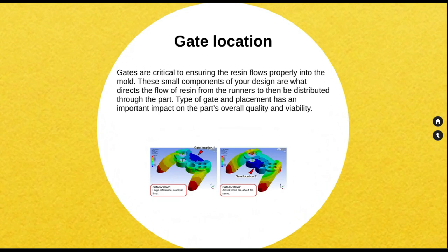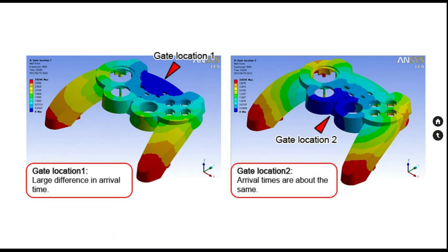Gate location is also very important to get uniform cooling during the molding process. Multiple softwares are used across the industry to evaluate mold flow, which helps understand how fast different areas of the part cool and how fast the mold fills different areas. For example, with the gate location on the back side of the part, it takes longer for the plastic material to reach the end of the part, whereas choosing the correct gate location makes the time for material to reach all corners approximately the same, allowing the part to cool uniformly.